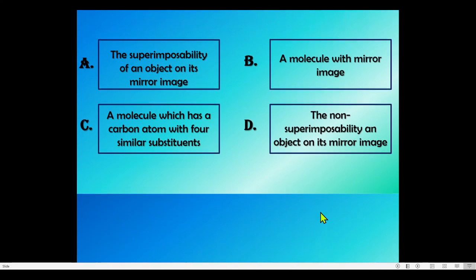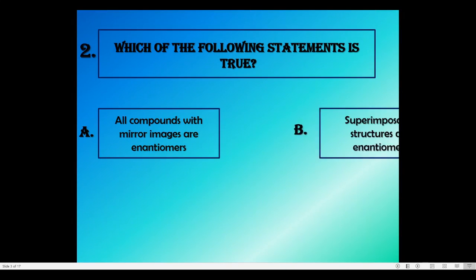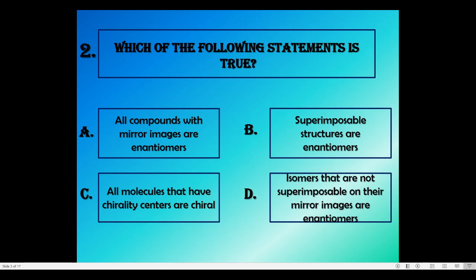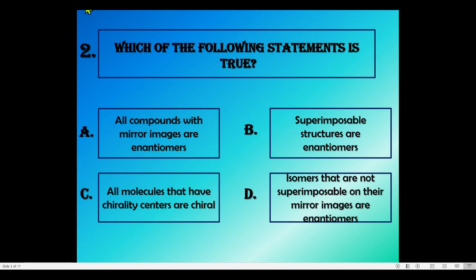We will proceed to question number two: which of the following statement is correct about enantiomers? Option A: all compounds with mirror images are enantiomers. Option B: superimposable structures are enantiomers. Option C: all molecules that have a chirality center are chiral isomers. Option D: molecules that are not superimposable on their mirror image are enantiomers.